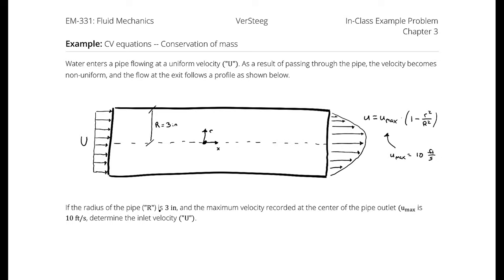Water enters a pipe flowing at a uniform velocity U. As a result of passing through the pipe, the velocity becomes non-uniform, and the flow at the exit follows a profile: u = u_max times (1 - r²/R²). Here, little r is the radial position measured from the centerline, and big R is the constant representing the overall radius of the pipe.